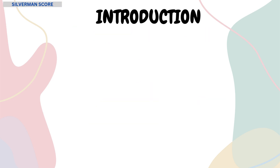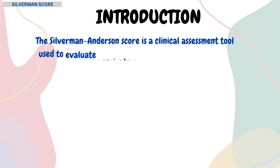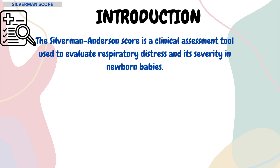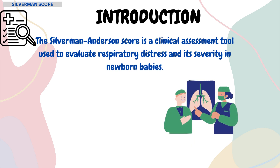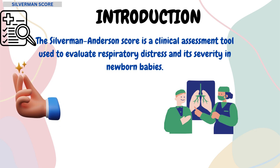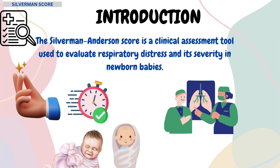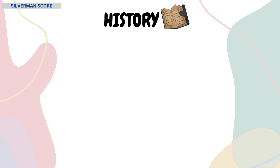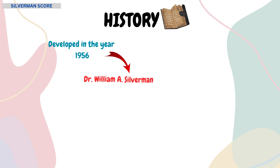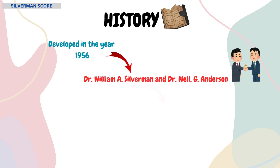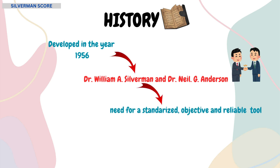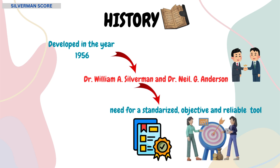Let's start with the introduction. The Silverman Anderson score is a clinical assessment tool used to evaluate respiratory distress and its severity in newborn babies. It is a quick yet easy tool that can be used for preterm and term babies. It was developed in the year 1956 by Dr. William A. Silverman and Dr. Neil G. Anderson, as there was a need for a standardized, objective, and reliable tool to assess the severity of RDS in preterm and term babies.